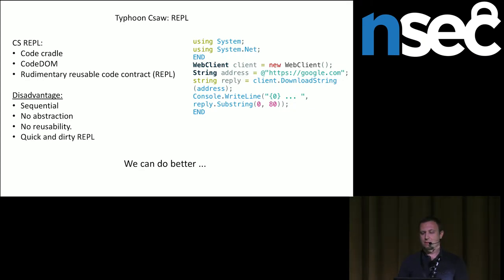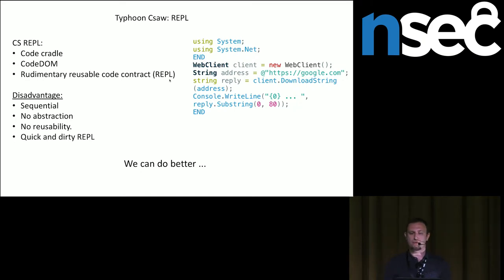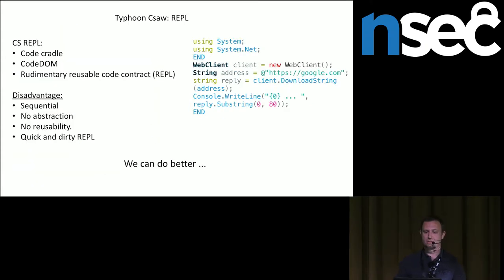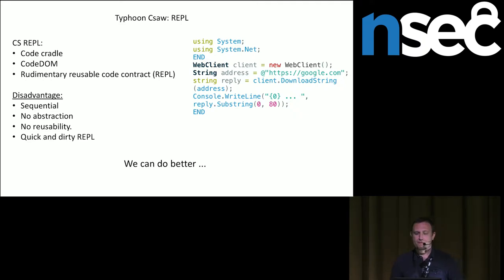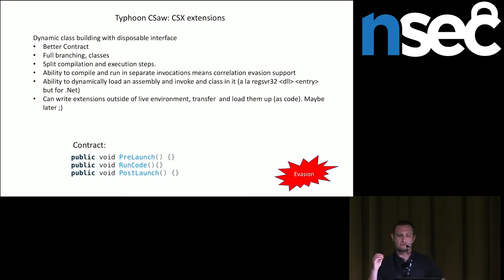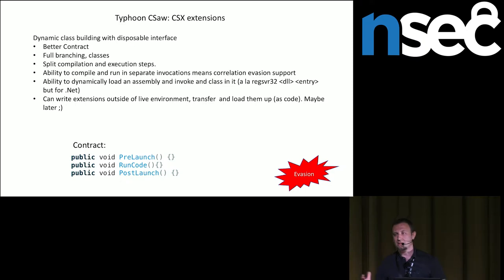On the right side there is a script that you can paste into the REPL — if you brought a script you can just paste it in, it will compile and give you a result. It's a crude way of doing REPL and scripting together. We can do better — let's fix the reusability and expansion issue we had with the REPL. Let's create CSX extensions. CSX is just a name — a C# extension.